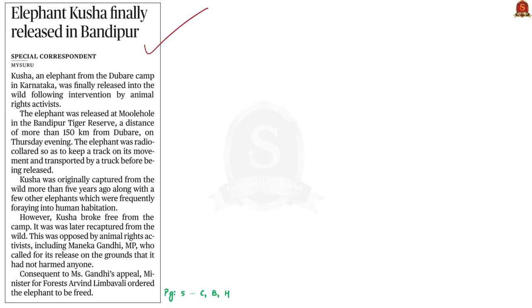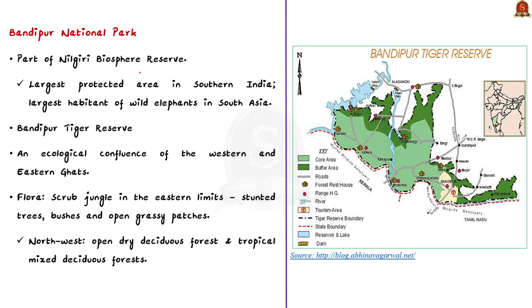According to the next article, an elephant named Kusha was released into the wild in the Bandipur Tiger Reserve. Let us discuss Bandipur National Park and Bandipur Tiger Reserve in detail. The Bandipur National Park is a part of the Nilgiri Biosphere Reserve, the largest protected area in Southern India and the largest habitat of wild elephants in South Asia. It is located in Southern Karnataka.